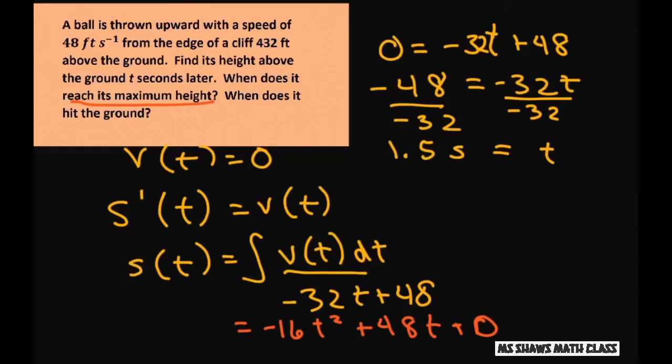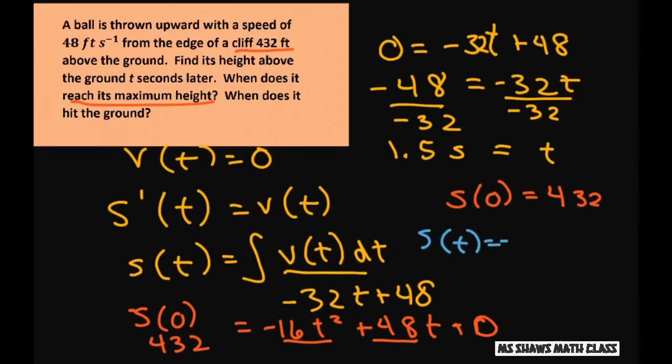So we know that s(0) equals 432. So there's that. So what you're going to do is plug in 0 in here and get your d. So s(0) is really 432. Plug in 0 in here and you get your d is going to be 432. So our final equation is going to be s(t) equals negative 16t squared plus 48t plus 432. Again, when you plug in 0s in here, these two will go away and you get d equals 432.